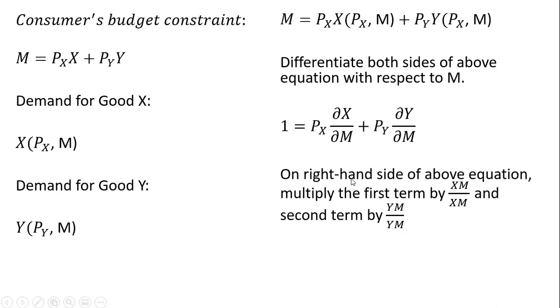The next step is on the right-hand side of the above equation, we're going to multiply the first term by XM divided by XM. And then we're going to do the similar thing to the second term. We're going to multiply the second term by Y times M divided by Y times M. So doing that, the equation now becomes the following.